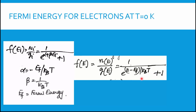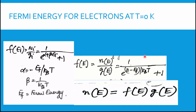Using the distribution function formula, we calculate the relation between the total number of electrons and temperature at T = 0 Kelvin. From this equation, the number of electrons as a function of energy is n(E) = f(E) · g(E), where f is the distribution function and g is the number of quantum states — obtained by cross-multiplying.